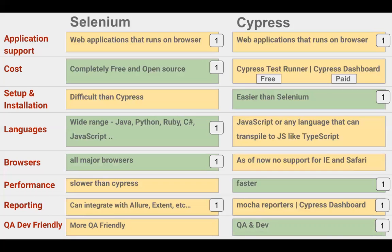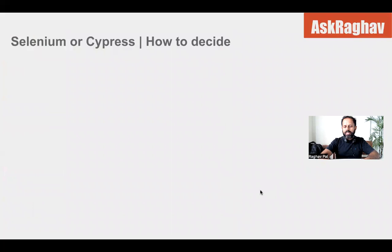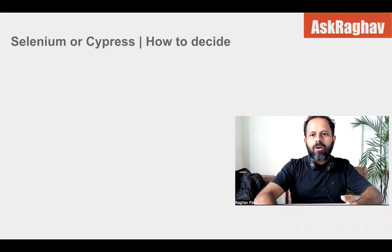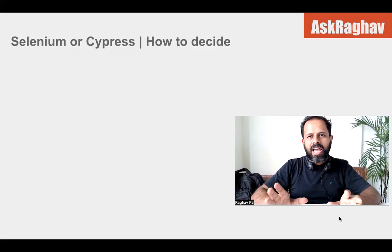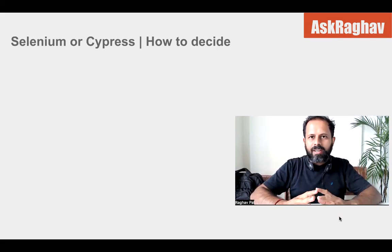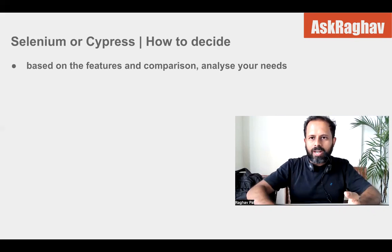That's the complete comparison — you can take a screenshot of this screen and keep it handy. Now let's discuss which is better for you and how to decide between Cypress and Selenium. A lot of times there is a particular point that is very important for you, and whichever tool has an advantage on that point becomes your natural choice. You can create a comparison based on the earlier features, analyze your application, and see what is most required.